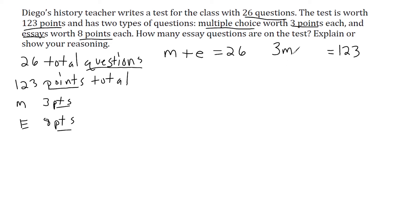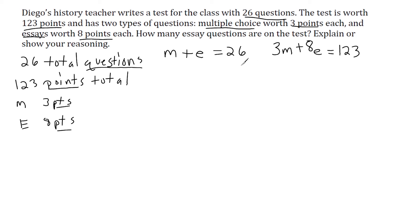We can multiply eight points for each essay question by the number of essay questions, E. Once we get the total points for essay and for multiple choice separately, we add those totals to get 123 points. Each equation cannot be solved on its own because each has two variables. So we're going to use substitution — taking one equation and setting it equal to one variable. I'm going to rewrite the first equation and set it equal to M by moving the E to the other side.